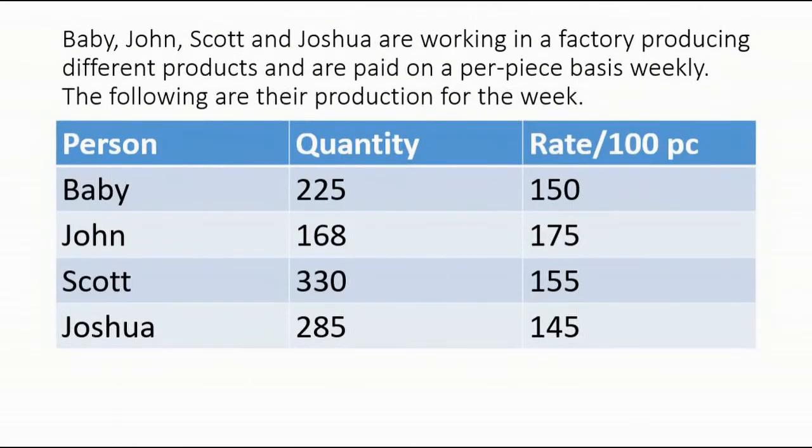Let's proceed to the third problem. Baby, John, Scott, and Joshua are working in a factory producing different products and are paid on a per-piece basis weekly. The following are the production for the week. Baby: quantity 225, rate 150 per 100 piece. John: 168, rate 175 per 100 piece. Scott: 330, 155 per 100 piece. Joshua: 285 and 145 per 100 piece.